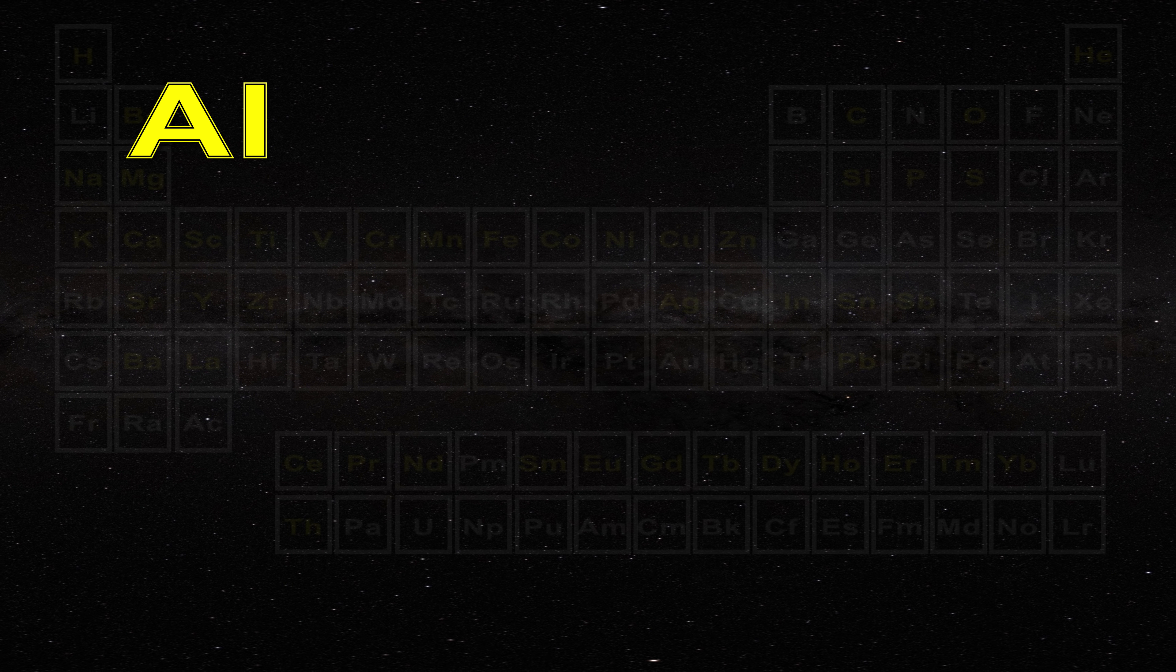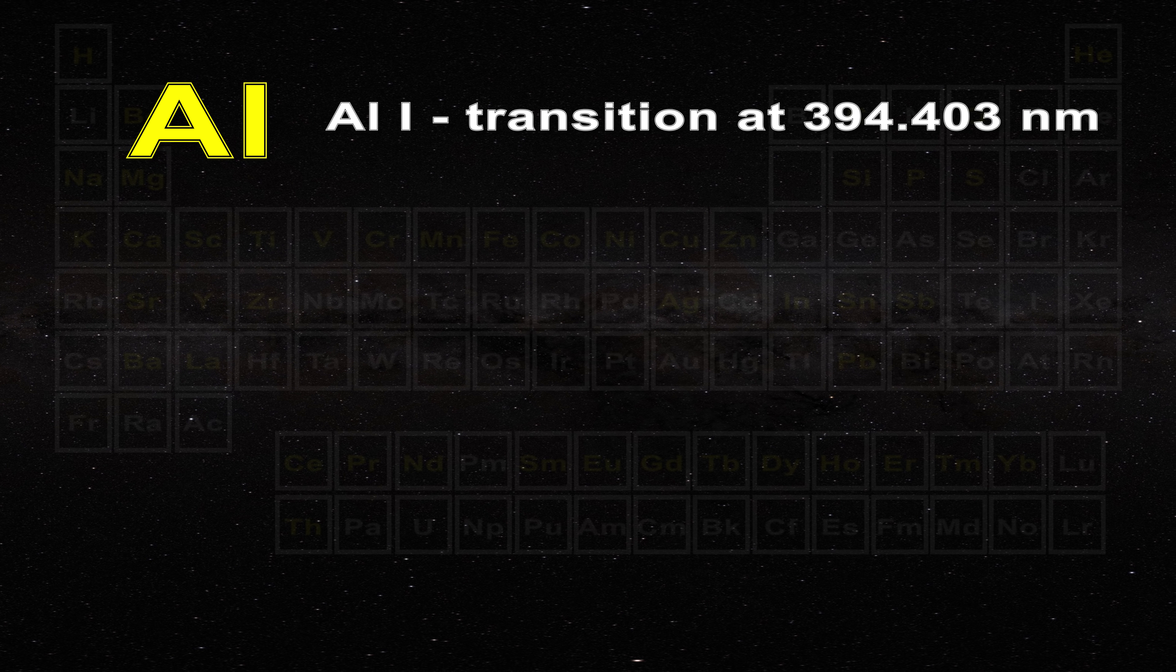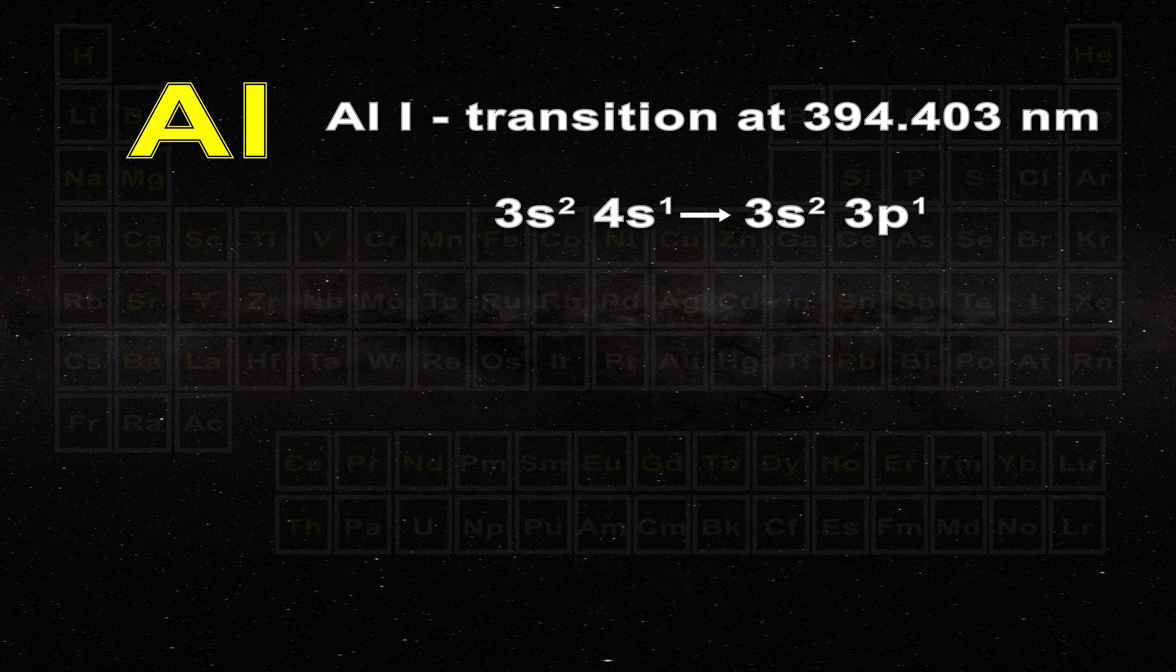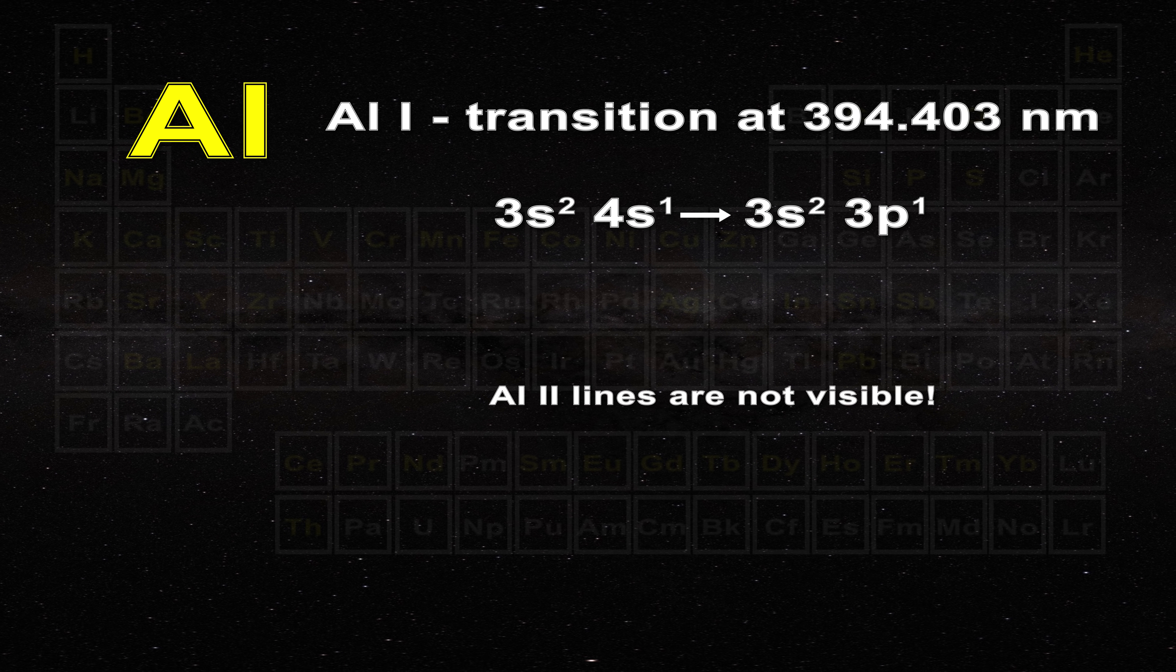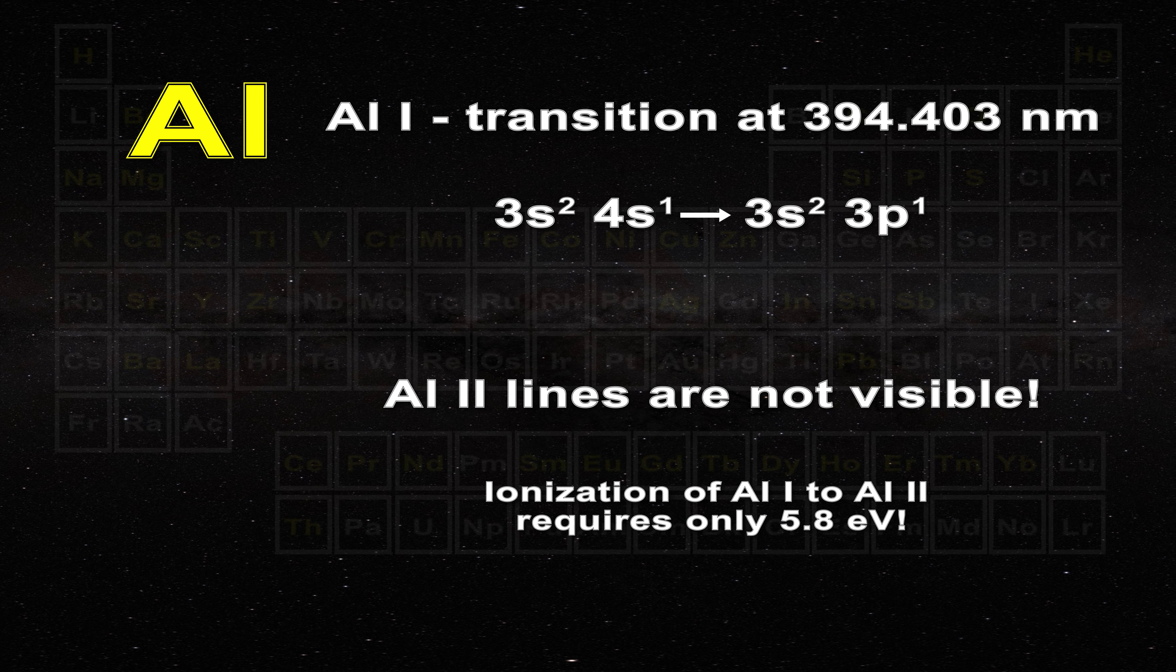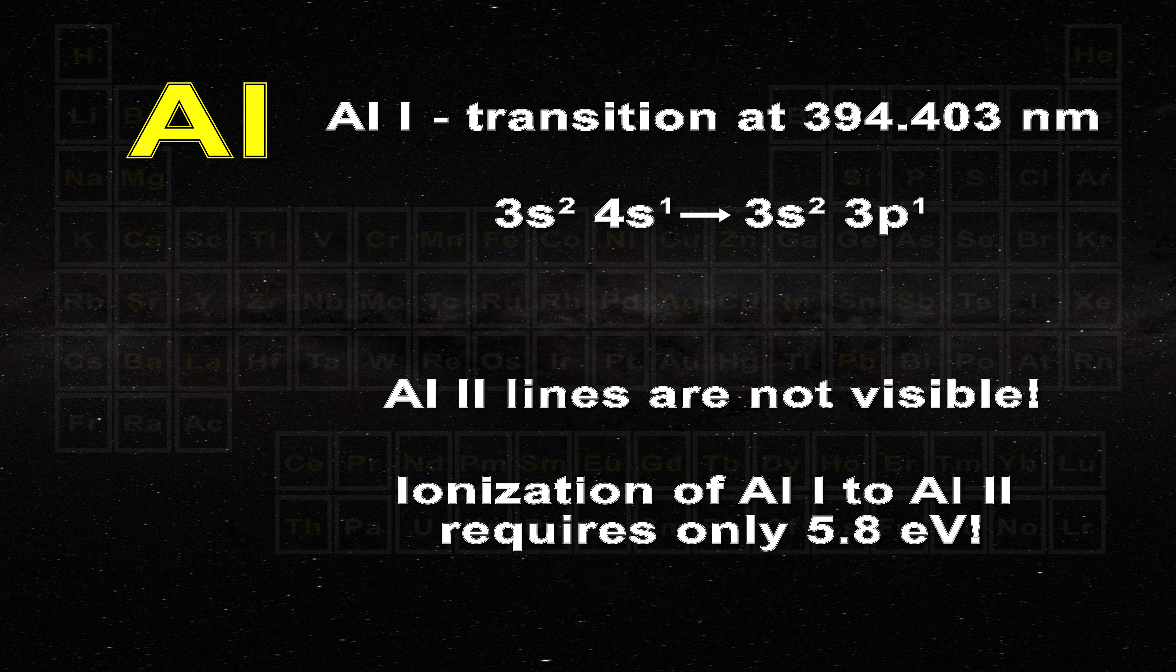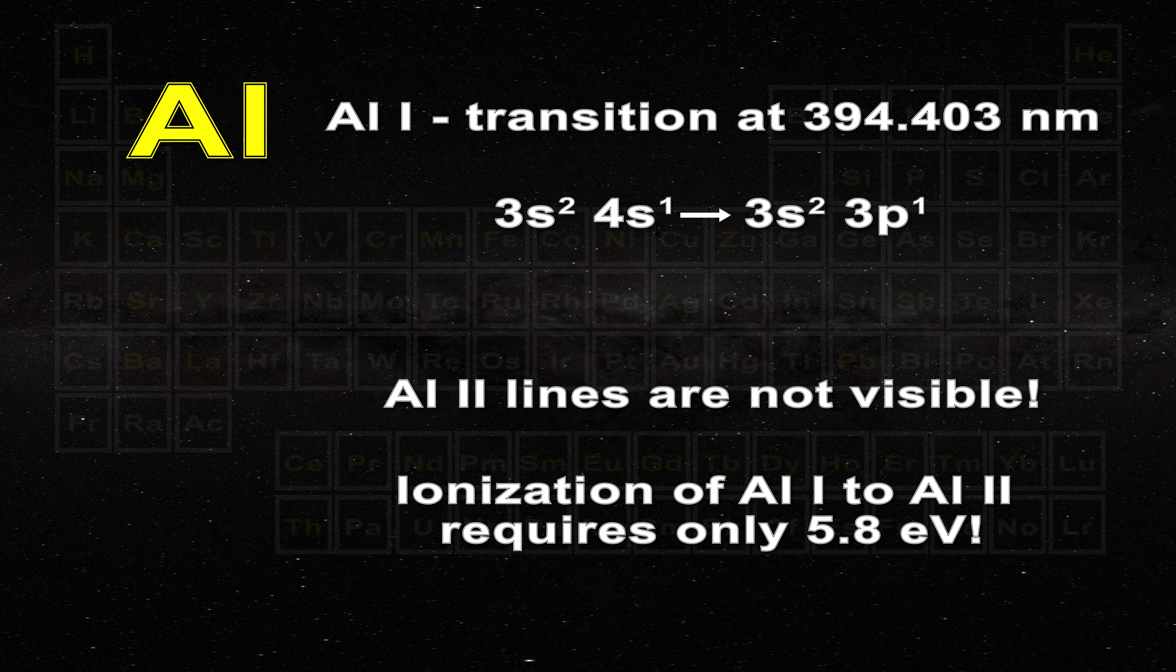Note that the aluminum line at 394.403 nanometers is visible. It involves a transition from the 3s2 4s1 state to the 3s2 3p1 state. A single electron is involved however aluminum 2 lines are not visible in the chromosphere even though the ionization of its outer electron requires only 5.8 electron volts. Note however that aluminum 2 does not have an unpaired electron readily available whereas aluminum 1 did. That is why aluminum 2 lines are not seen.